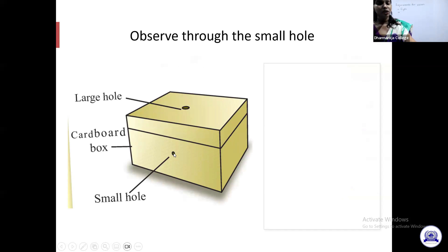First, put some object inside your box — suppose you have an eraser or a coin. Put it inside the box. Then, at the first step, cross the large hole with a cardboard or a book. The first step is to cover the large hole, and then observe what is inside the box by using the small hole.